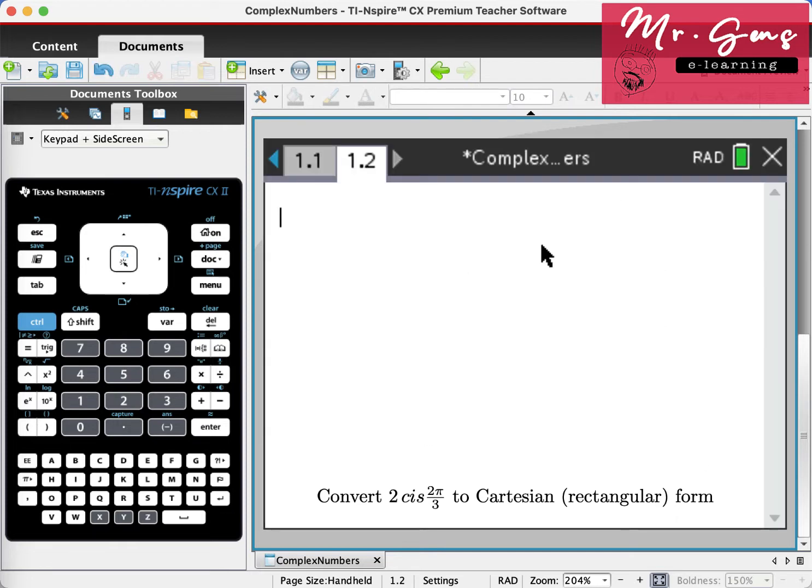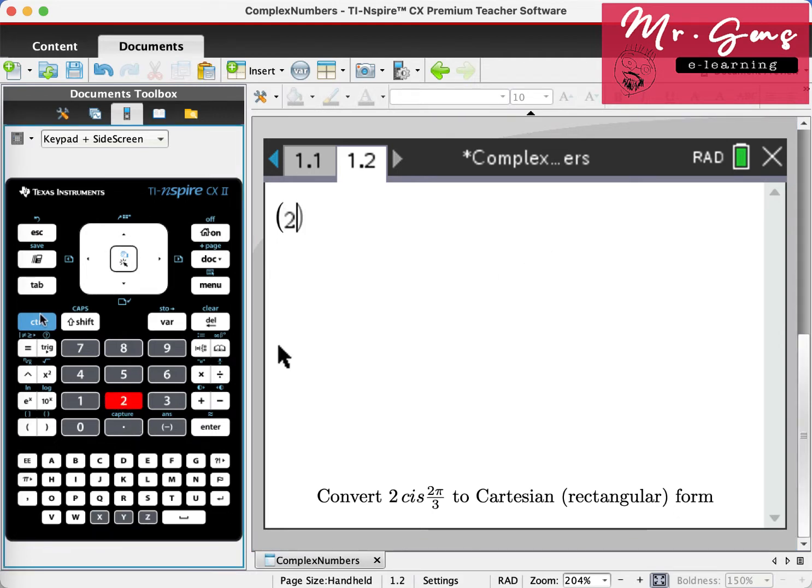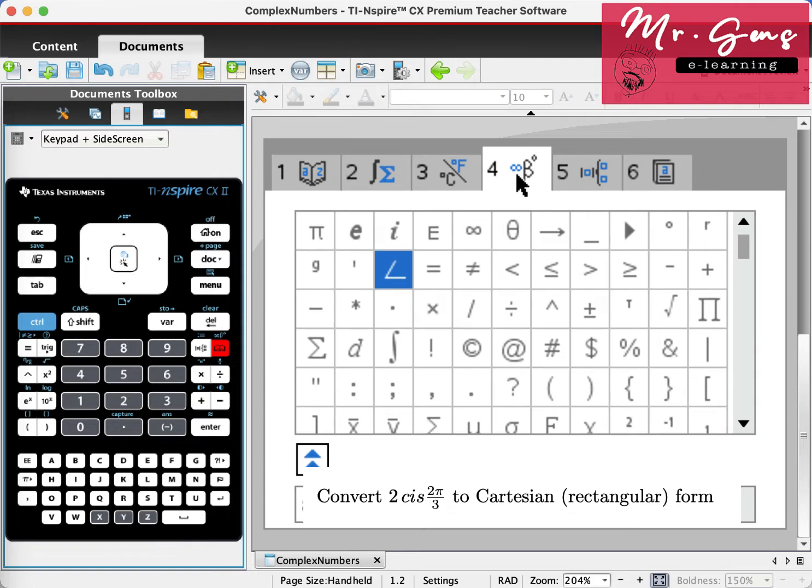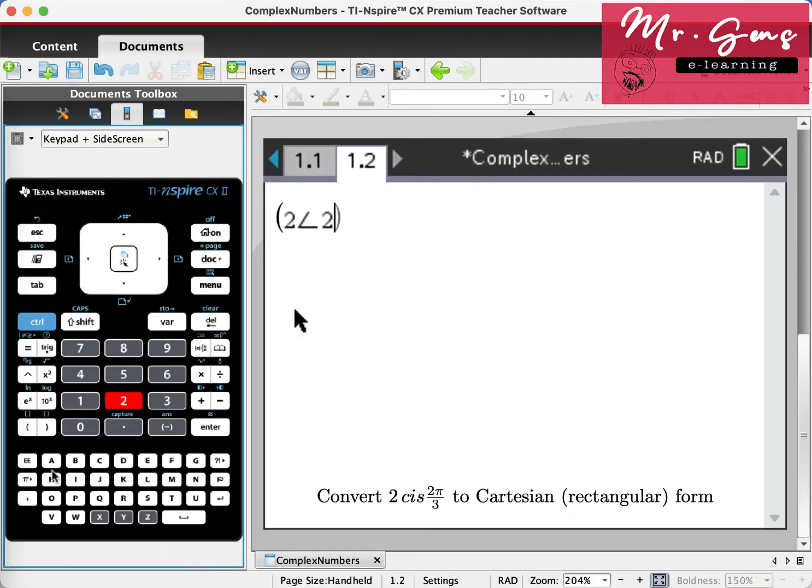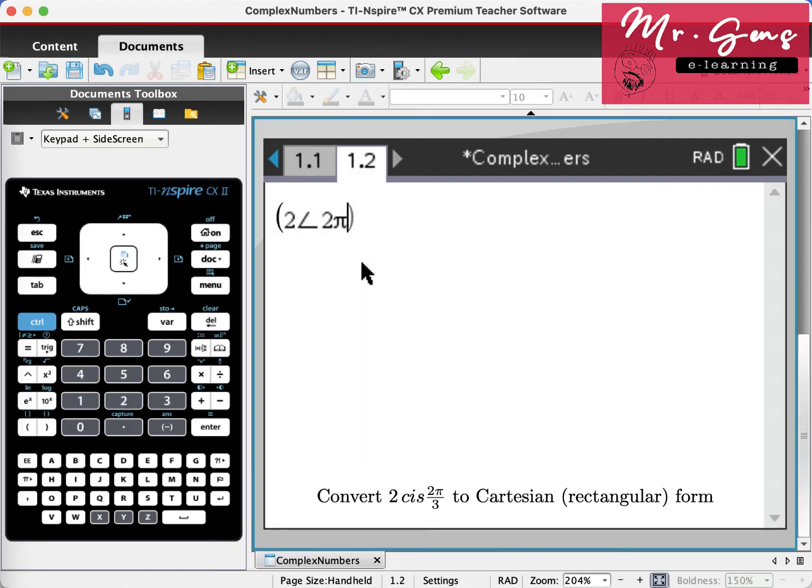And type this function. Parenthesis is required. Instead of CIS, you can click on the catalog button, then four, you can recall the angle sign from there. So we have 2π over 3, and we just press enter, then the calculator directly converts the polar form to rectangular form.